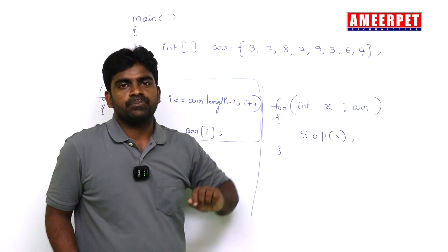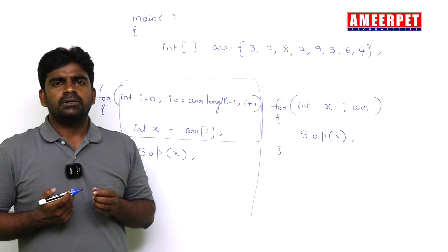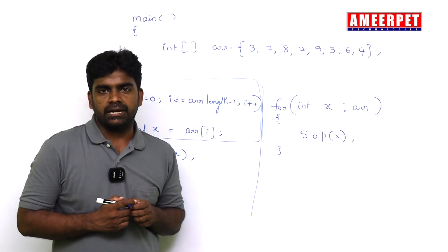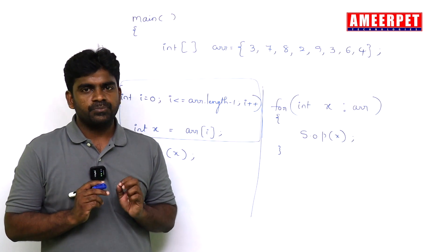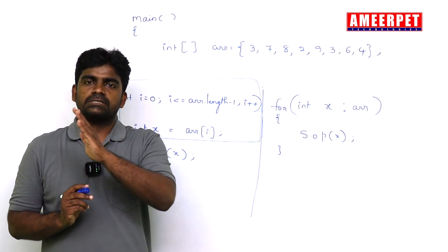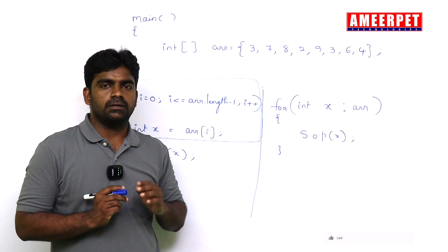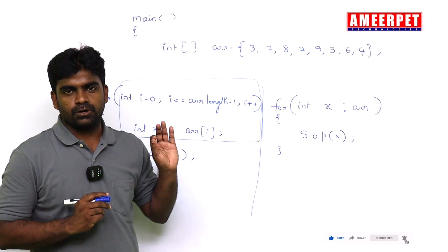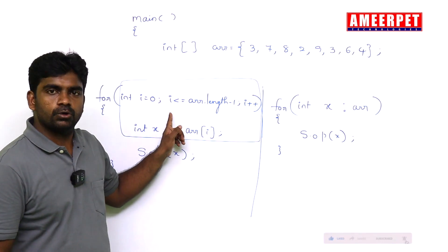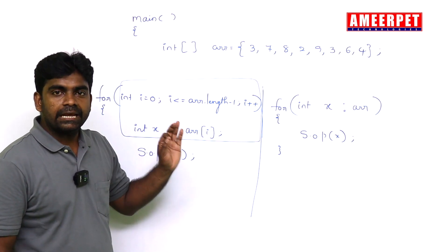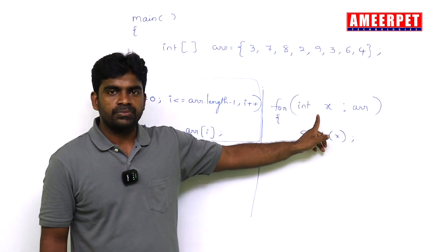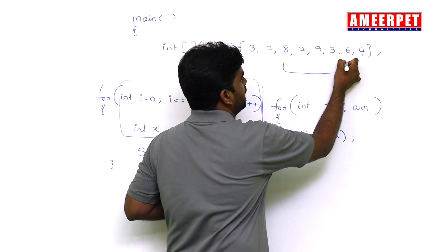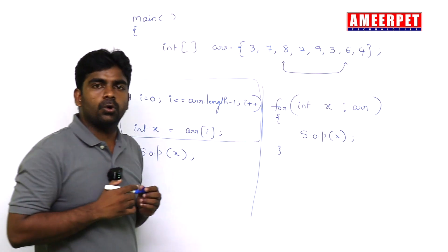So this is the simple syntax they have given, called for-each loop. Sir, any limitations? Yes, limitations are there. What are the limitations? Simple. If you want to process elements in reverse order, it is impossible. I want to display elements in array in reverse order, you must go with the for loop only. We cannot use for-each loop. Next, I want to process elements from specific set, from here to here only I want to process. No, in that case also for-each loop is not possible.